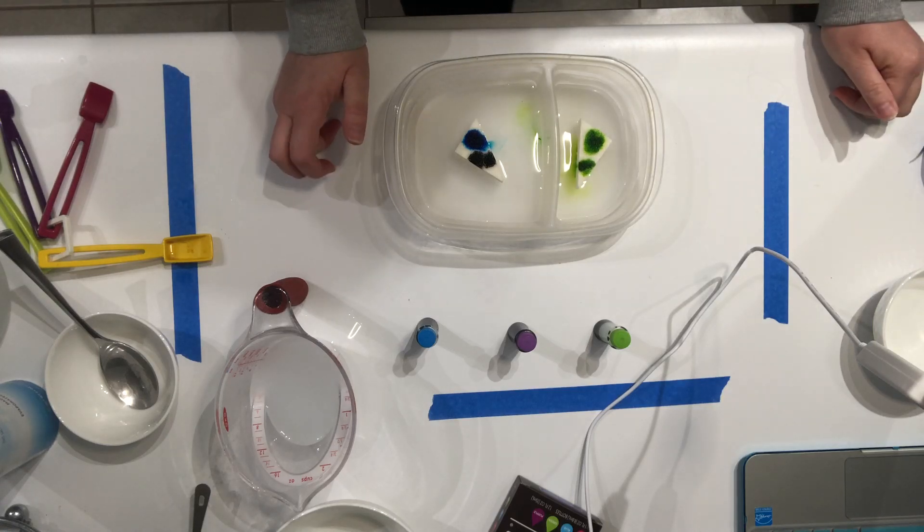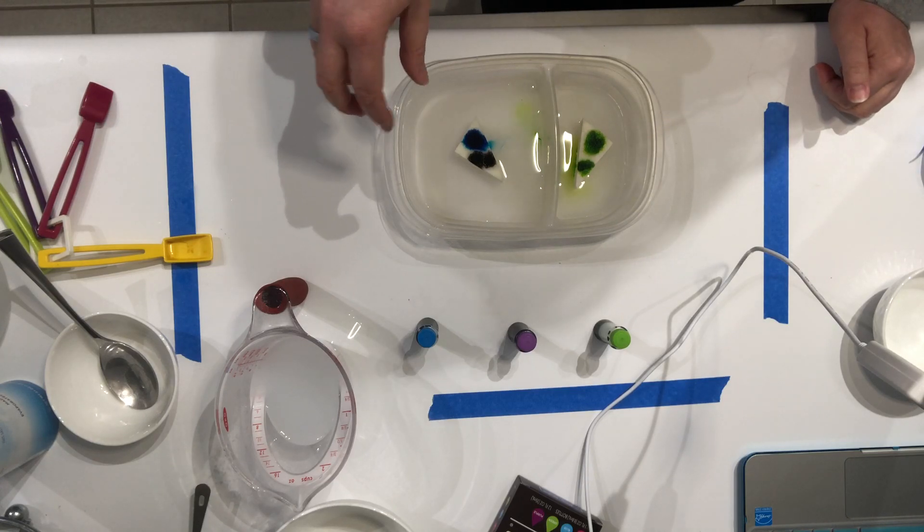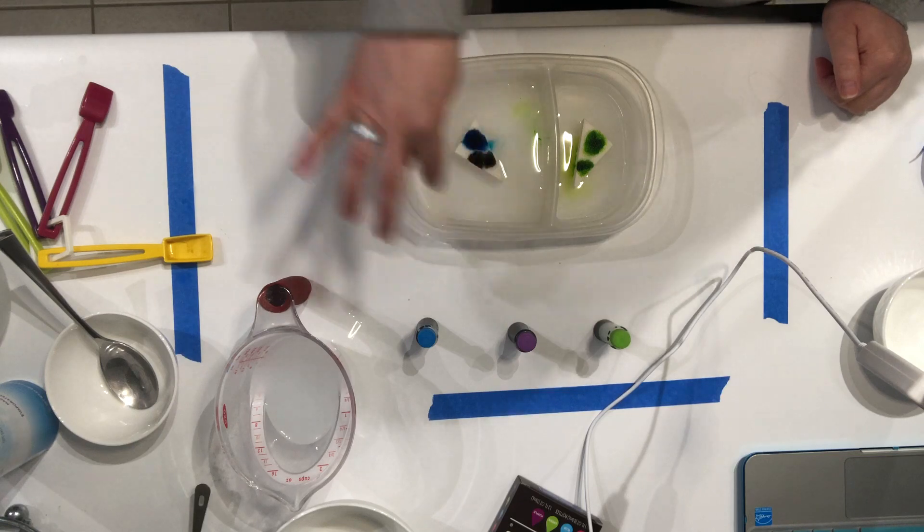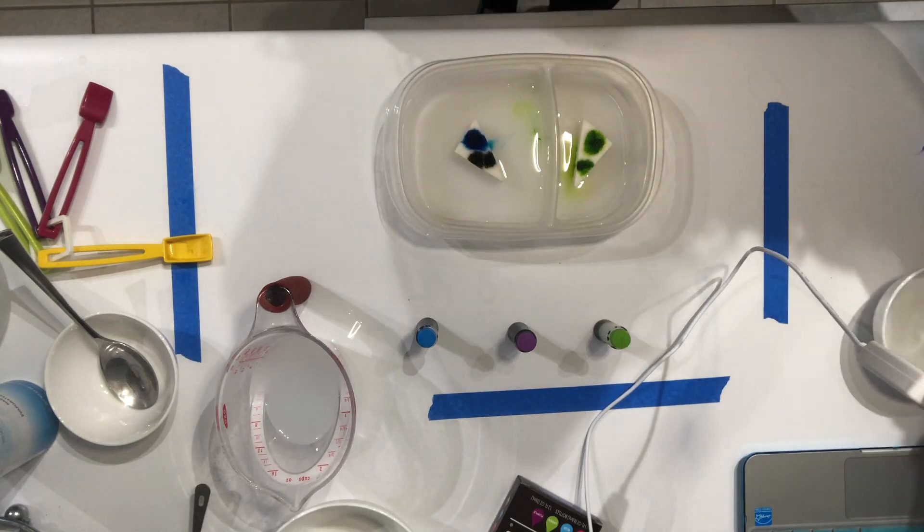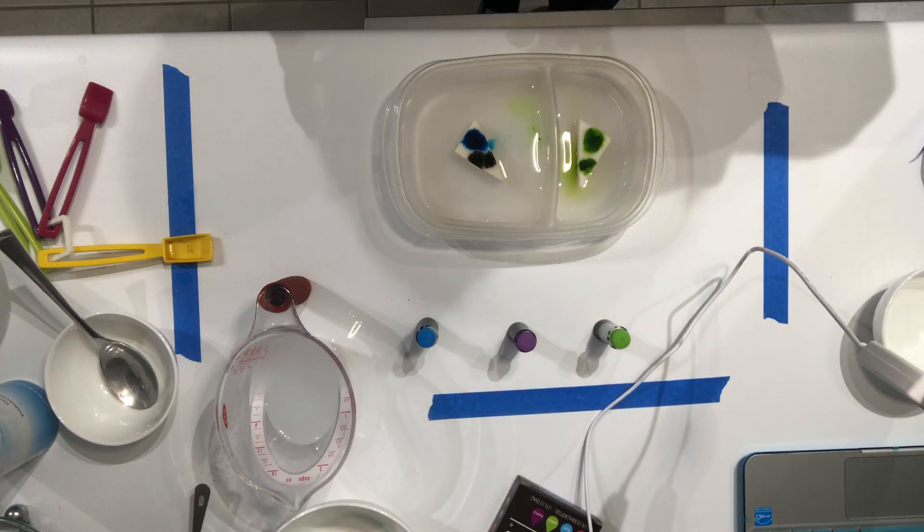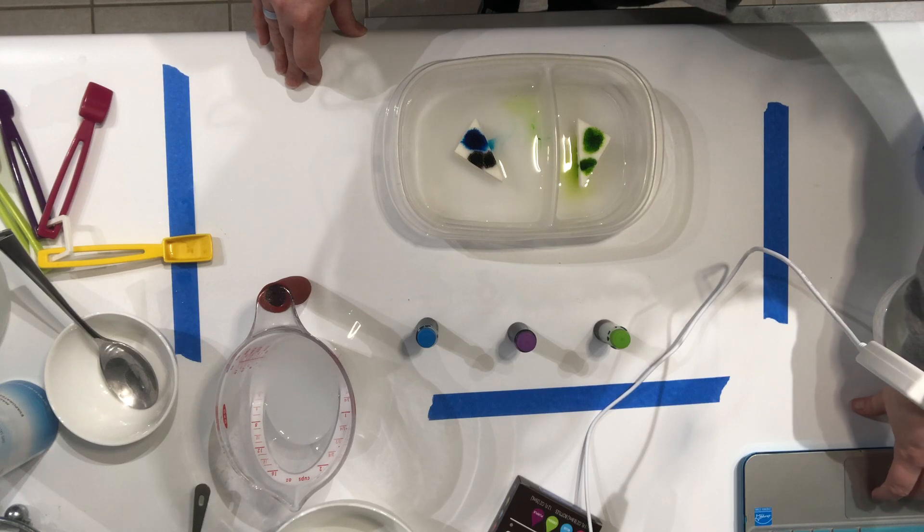But let this sit, and then as the water evaporates and you don't have any more in the bottom of your tray, you can take your extra and pour it just around into your tray and let the crystals keep growing for as long as you want or until your liquid runs out.